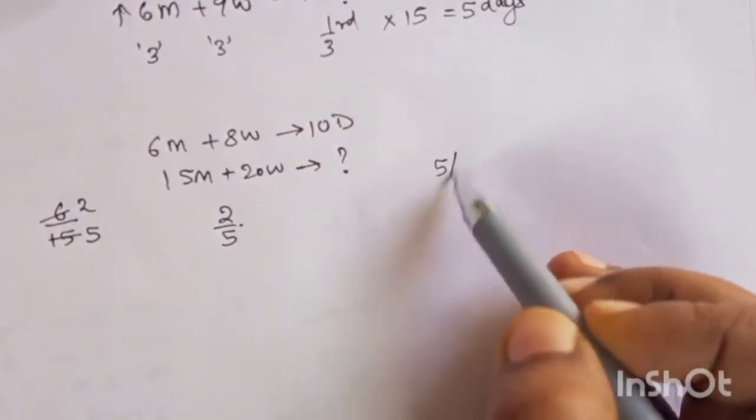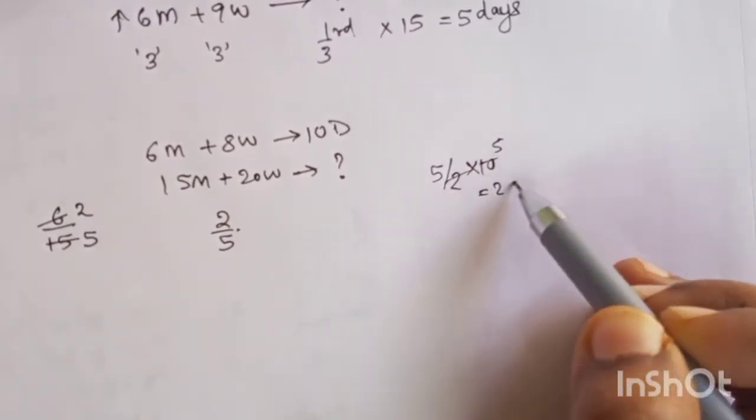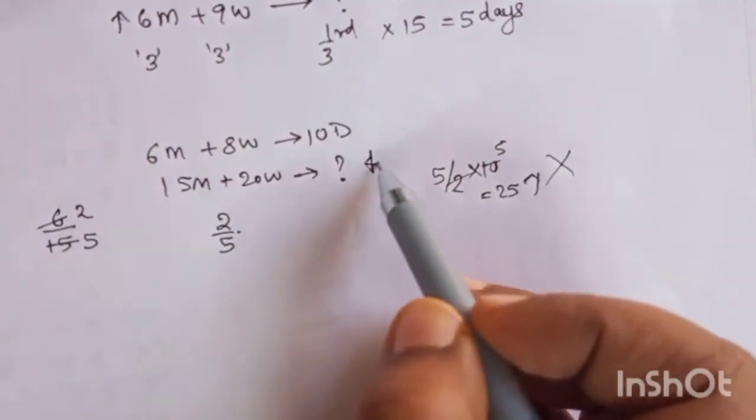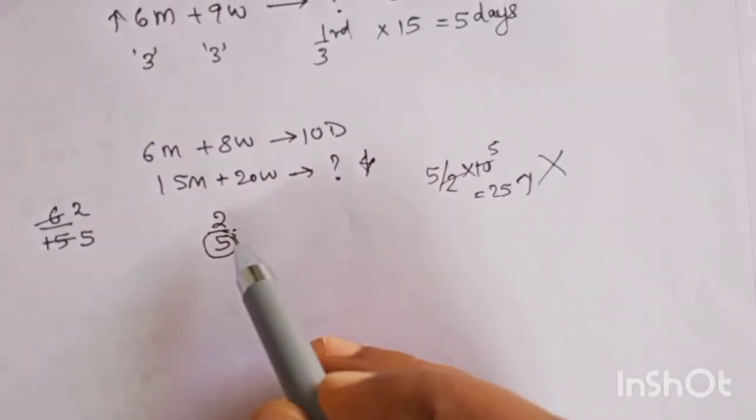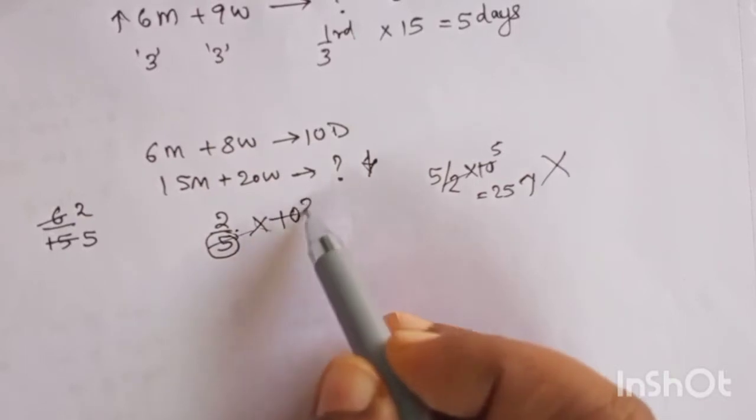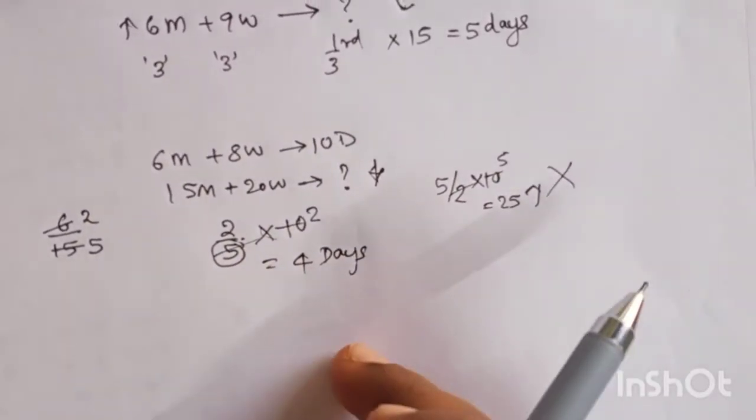But if there is confusion, if suppose you decide to do 5 by 2 into 10, then what happens? Number of days are increasing, so this cannot be happening. If number of people are increasing, number of days have to decrease. So whatever ratio you are taking, the denominator should be bigger than the numerator. So you multiply 2 by 5 into 10, that's 4. So now the work will be done in 4 days.